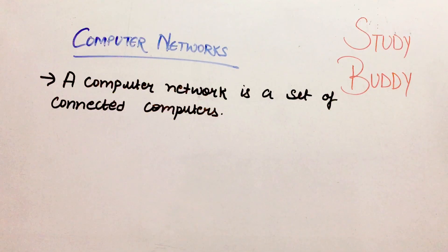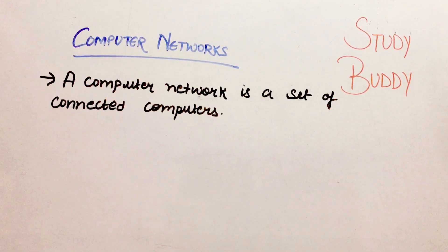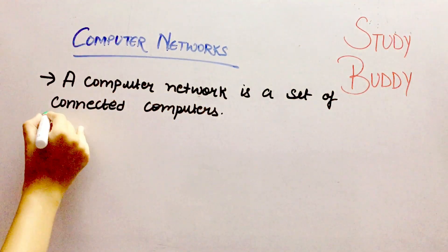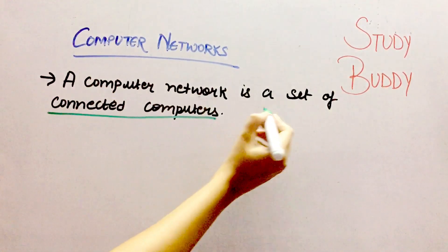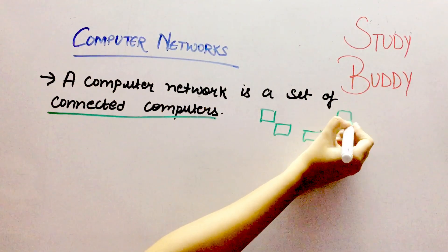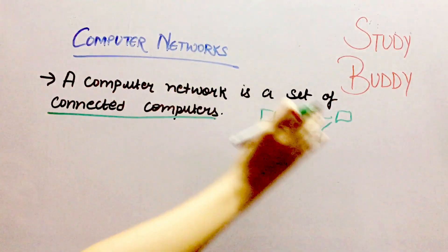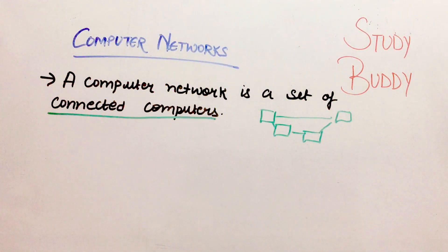In this video we will be talking about the basics of networking and firstly we will discuss about computer networks. So what is a computer network? A computer network is a set of connected computers. If you have some computers and all these computers are linked, then we can say that a network is created. This is what computer networks is called.